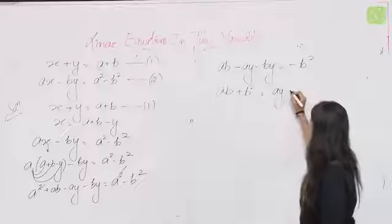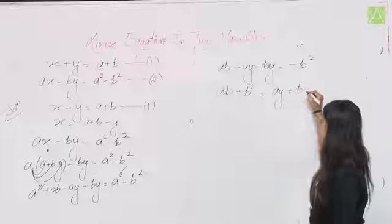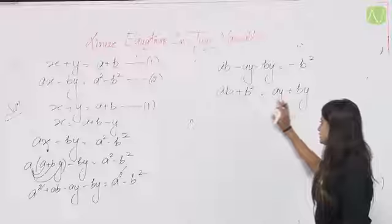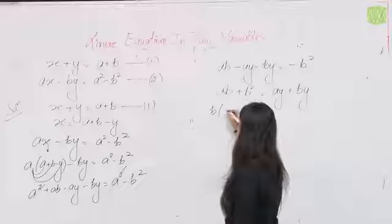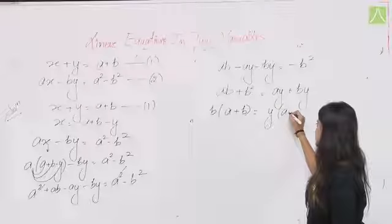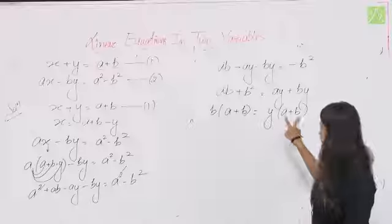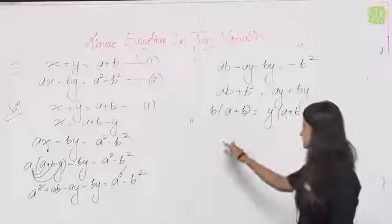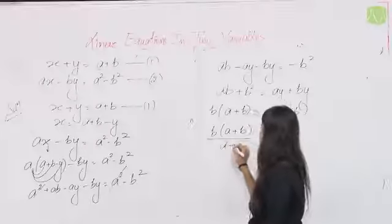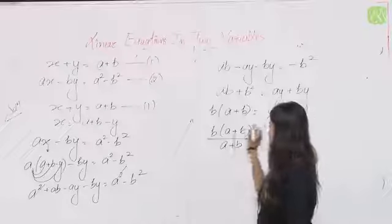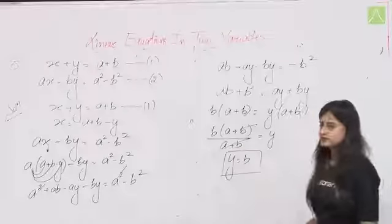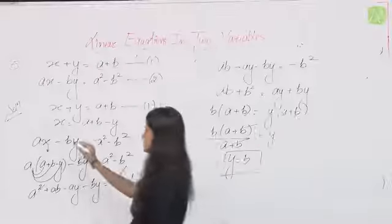LHS में b common: b(a + b) = y(a + b)। दोनों तरफ से (a + b) cancel हो जाता है, तो y = b।